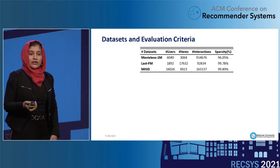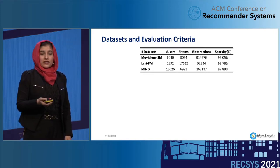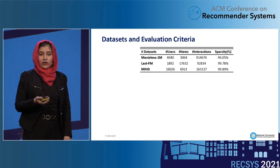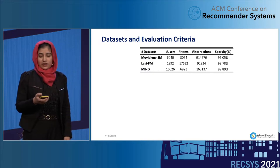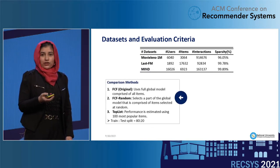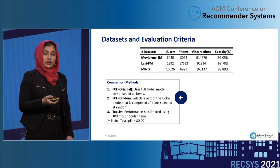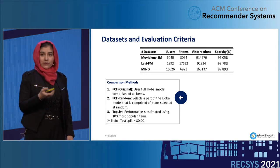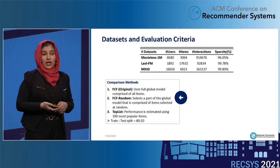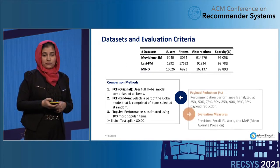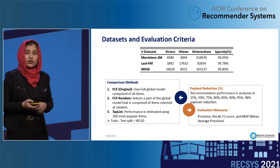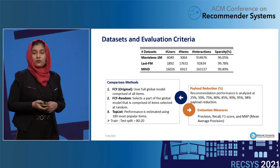Moving to the evaluation in the experimental section: for datasets, we used MovieLens, Last.fm, and Mine, where the number of interactions represents the observed user-item interactions, and sparsity refers to the percentage of unobserved user-item interactions in the training dataset. For comparison, we used FCF Original, which uses the full global model, FCF Random, which selects part of the global model based on randomly selected items, and TopList, whose performance is estimated using the 100 most popular items ranked by interaction frequency. We used an 80-20 train-test split and analyzed performance at different percentages of payload reduction using well-known evaluation measures.